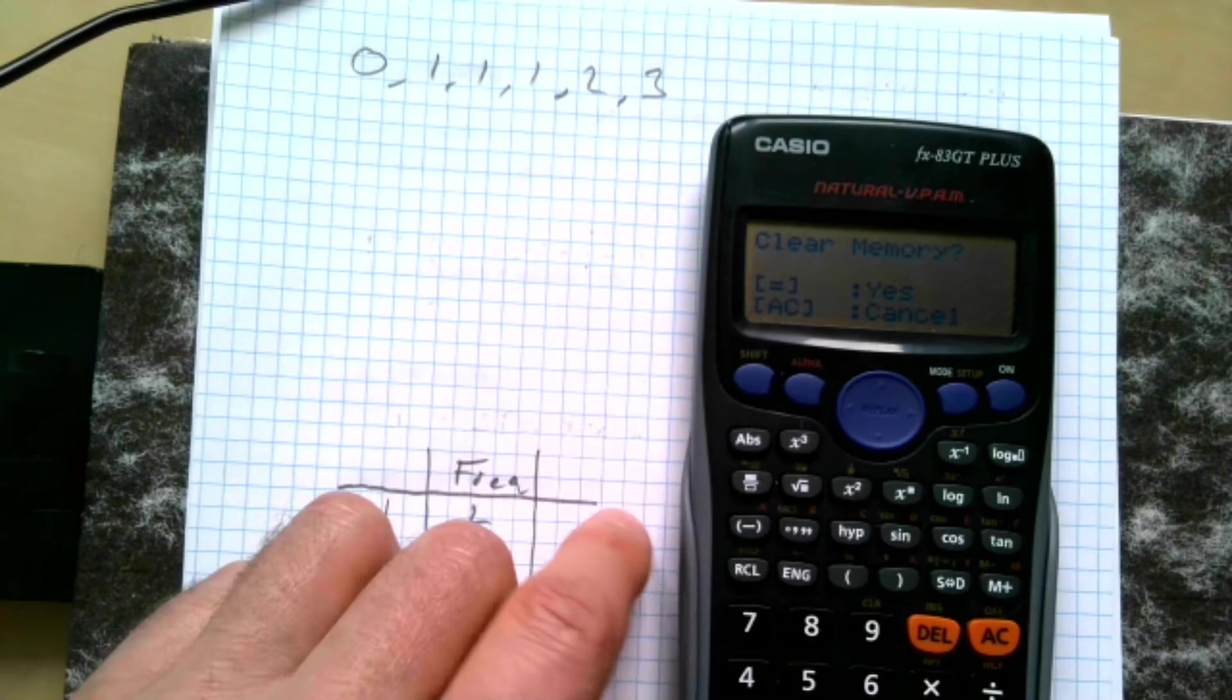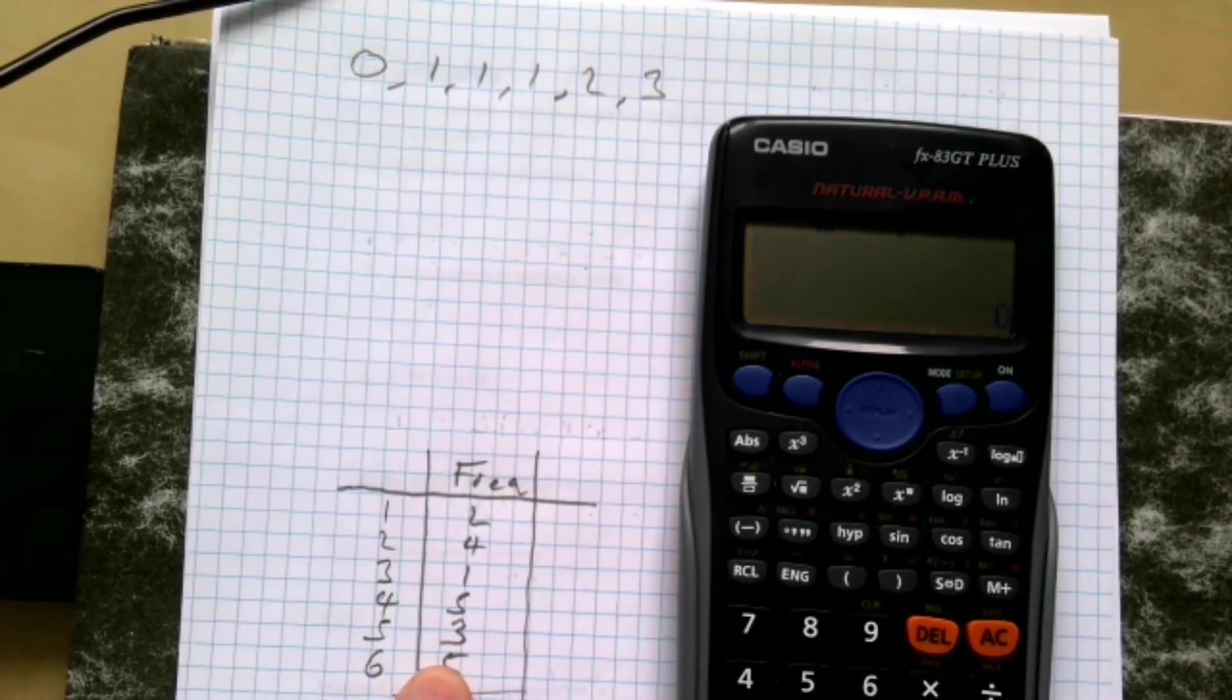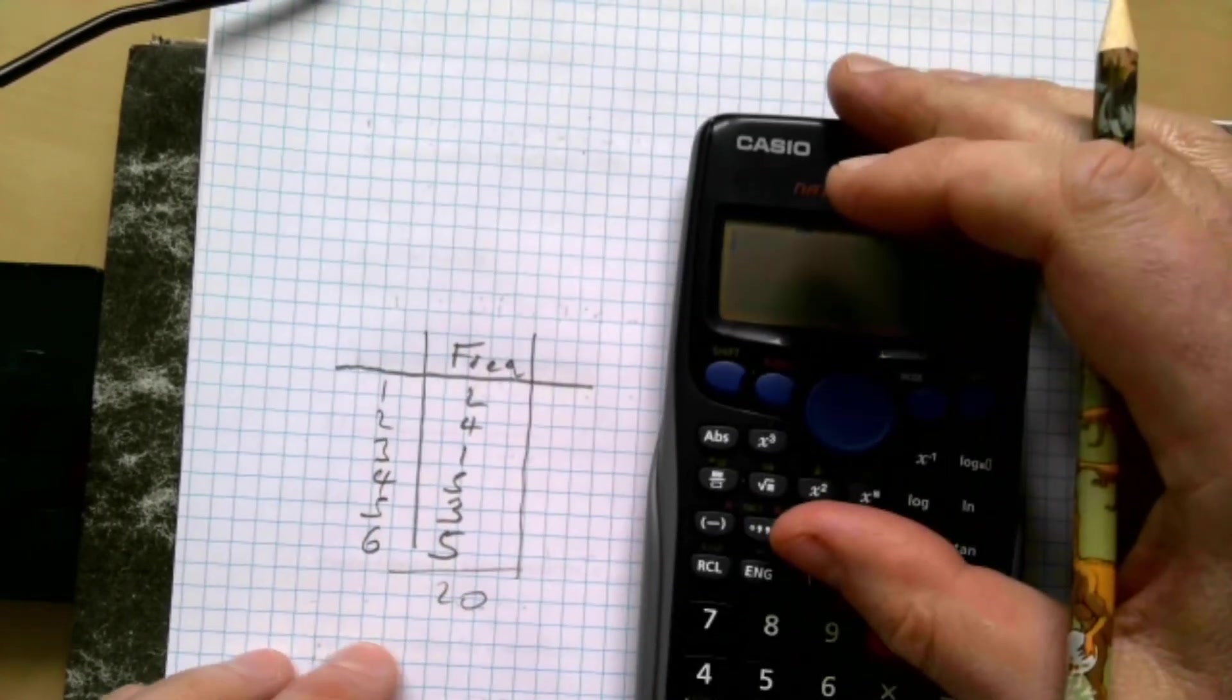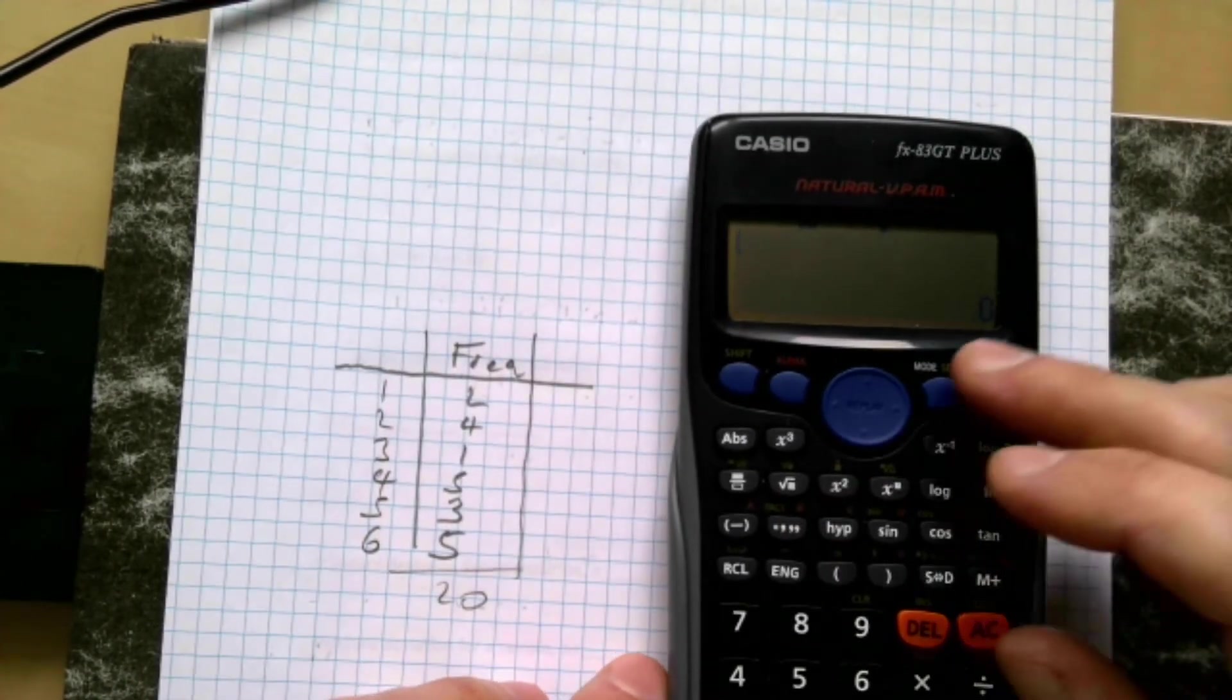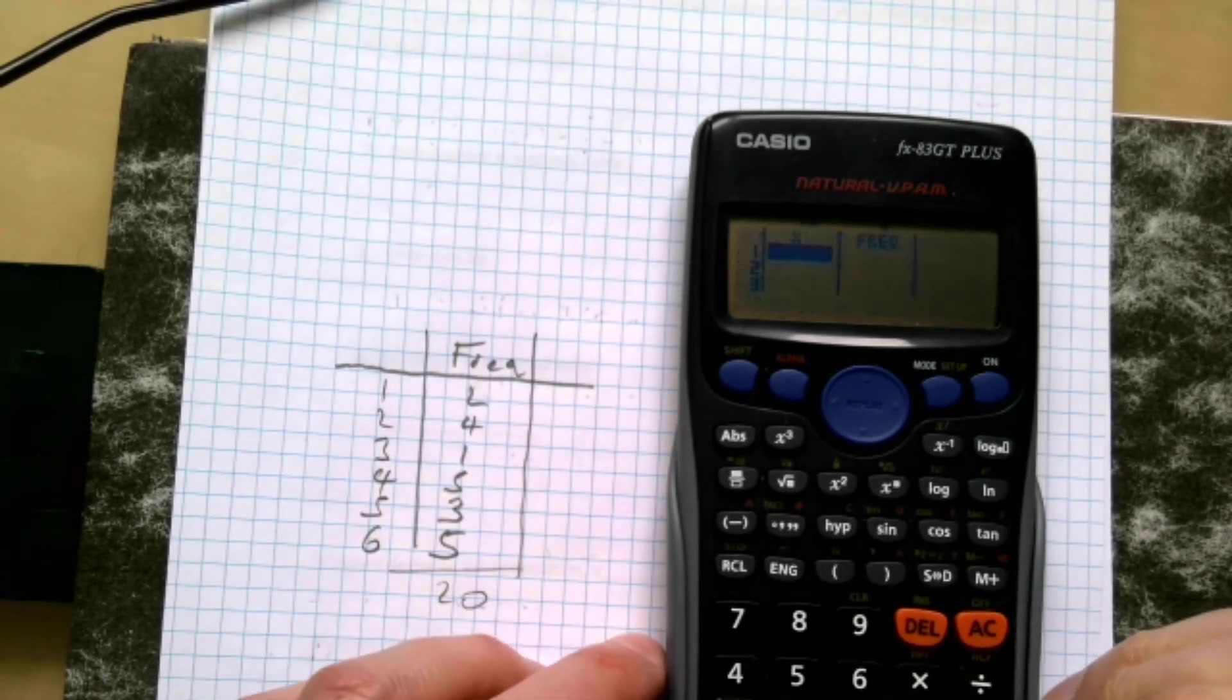So let's see if we can put then this information in. What am I going to do? I'm going into stats mode, which is two, one variable, and it's come up with the two things here, so that's good news.